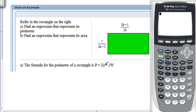In other words, 2 times the length plus 2 times the width. So, let's plug in our length and width. P equals 2, and then in parentheses, the length we're calling 2K plus 1 over 28 plus 2 times the width, which we are calling 7 over 4K plus 2.